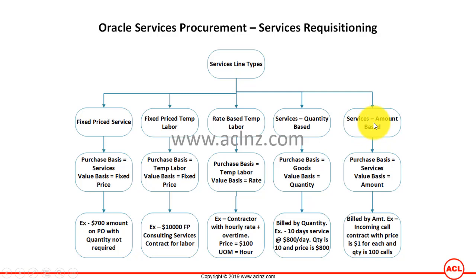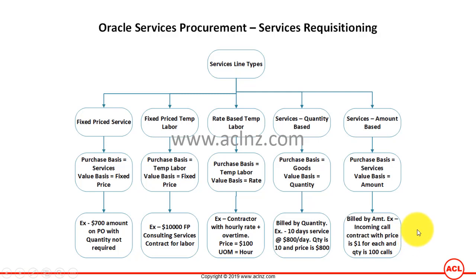The Services Amount Base line type has a purchase basis of Services and value basis of Amount. You are billed by amount — for example, an incoming call contract wherein the price is $1 for each call and the quantity is 100 calls. That's where you can potentially use this type of line type.